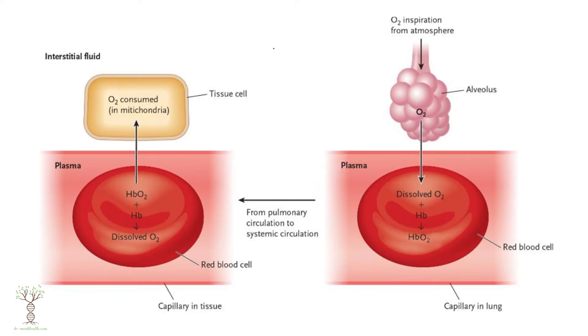When transporting oxygen, about 98 percent of it will be on hemoglobin, and the other two percent will be dissolved in the plasma, the liquid portion of the blood. Oxygen from the atmosphere goes to the alveoli, diffuses across the membranes, and combines with hemoglobin to form oxyhemoglobin in the red blood cells in the lungs. The blood then circulates to the tissues, where oxygen unbinds from hemoglobin and is used by the mitochondria to produce energy.